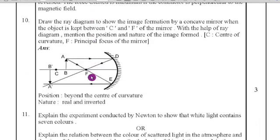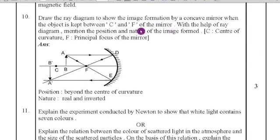Tenth question, draw the ray diagram to show the image formation by concave mirror when the object is kept between C and F of the mirror. With the help of ray diagram, mention the position and nature of the image formed. Here C center of curvature, F is the principal focus. This is the figure. Here object is there in between C and F. When the object is in between C and F, it formed the image beyond the center of curvature and it is the real and inverted image. If you have written this much, you will get three marks.